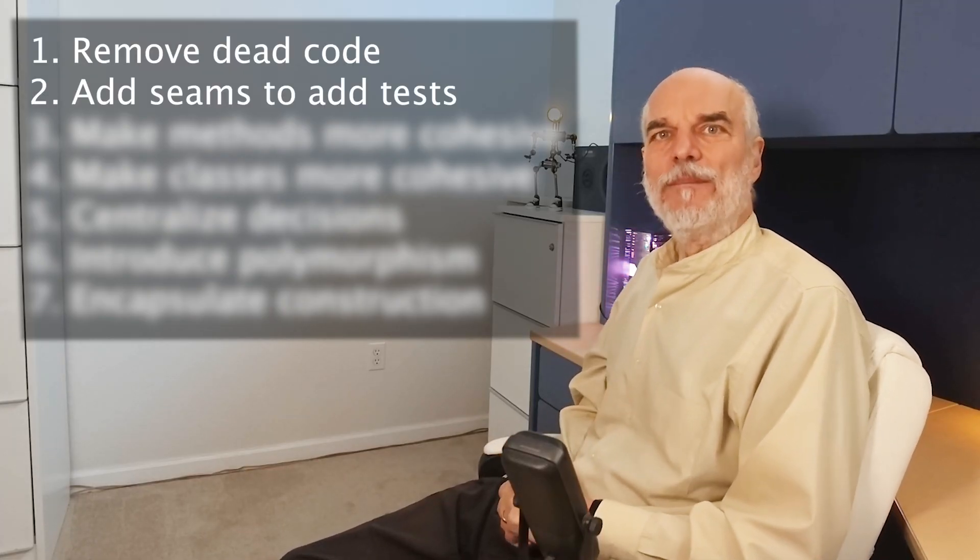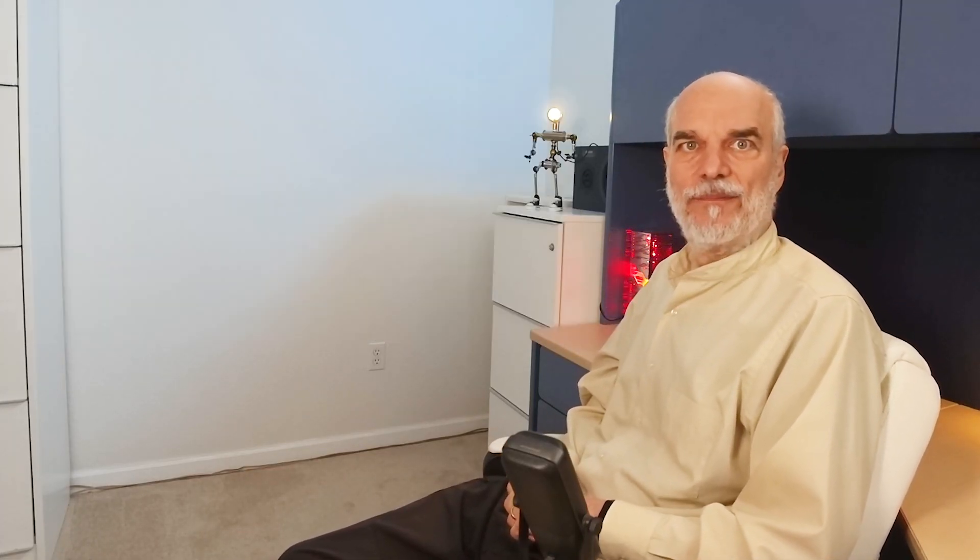Number two: add tests. One of the most valuable things to do with legacy code is to add tests to support further refactoring. But often, legacy code is so intertwined that it's difficult to isolate what needs to be tested. Michael Feathers shares a series of techniques for adding what he calls seams to make legacy code more testable in his book, Working Effectively with Legacy Code. These techniques make software more independent and more straightforward to test.